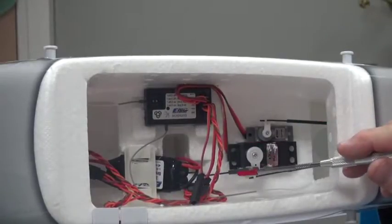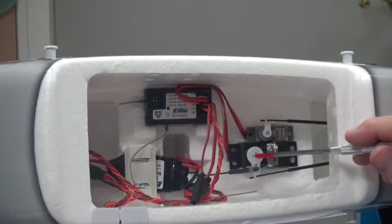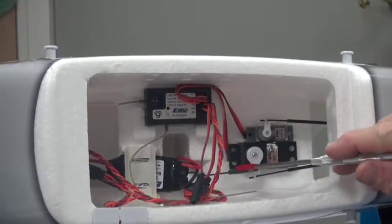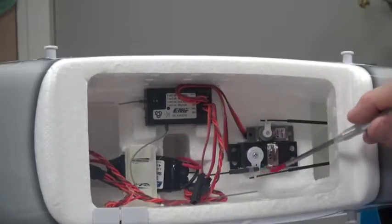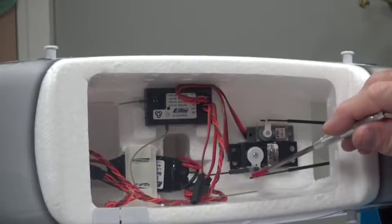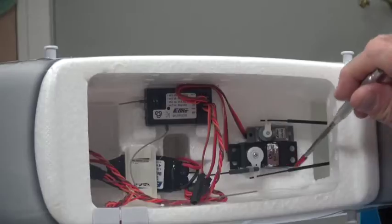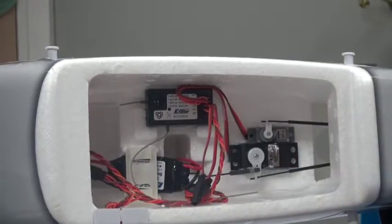For the rudder and nose wheel steering servo, you see a clevis here that leads up toward the nose, and you see a z-bend here on a wire that leads back to the tail and to the rudder.